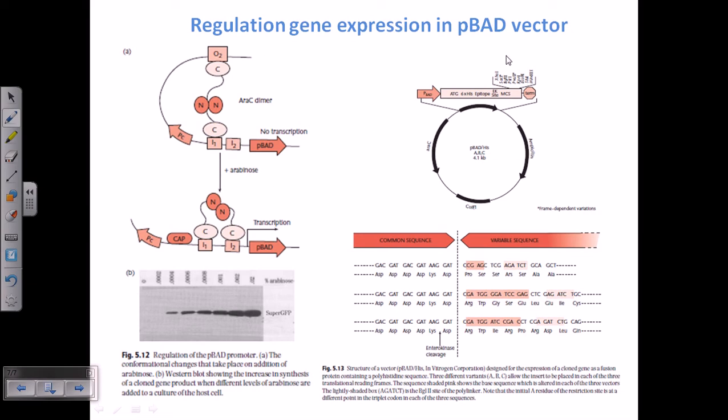Now again, the basic concept of Arabinose operon is that it is having several regions. It is having operator 1, operator 2, and also inducer 1, inducer 2 sites, and then we are having the promoter for the BAD or the gene BAD coding promoter, or P-Bad is the promoter. The controlling molecule for the expression of this Arabinose operon and for the expression of this P-Bad promoter is the AraC molecule.